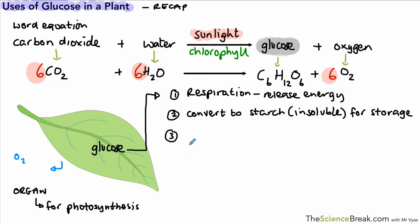So that's good for storage for later use. The third use is also for storage, but it's in the form of fats and oils. So plants do also have fats and oils. If you think of olive oil, vegetable oil, probably one or two others you can think of, and that's often found in seeds as an energy store for growing seeds.